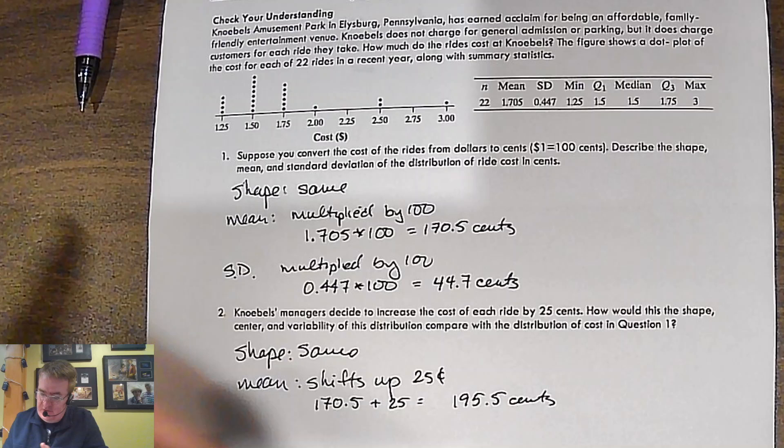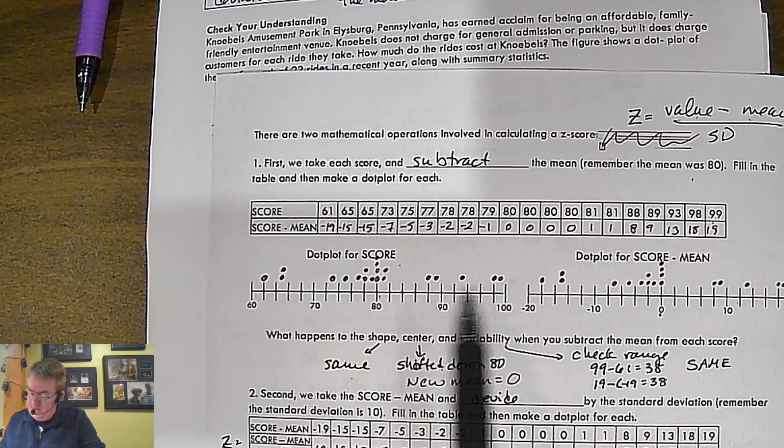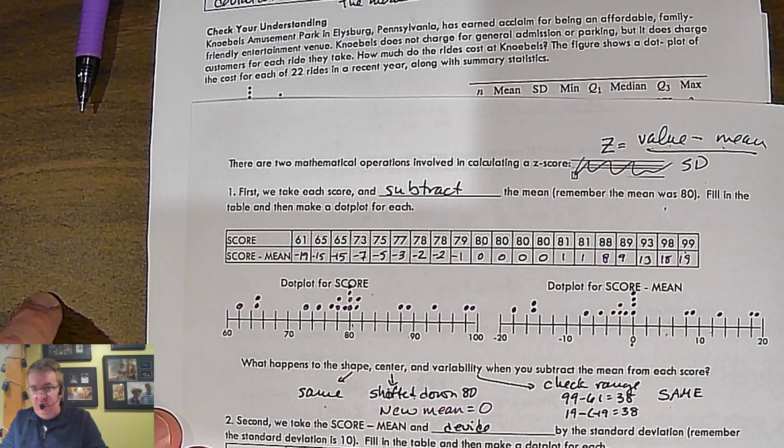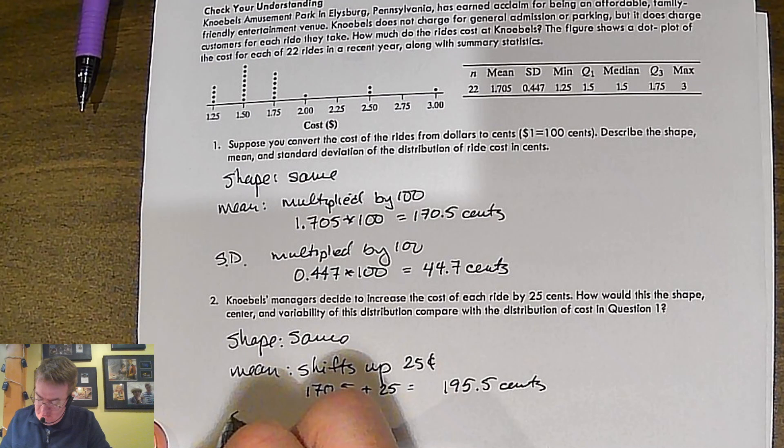If you go back to that first page. Oops, where'd it go? Second page, I'm sorry. Notice from here to here, okay? We just basically picked up these scores and moved them down 80 cents. And when we moved them down, boom, there we go. All right? Now, the range is the same. We're not changing anything there. Okay? So standard deviation is the same.